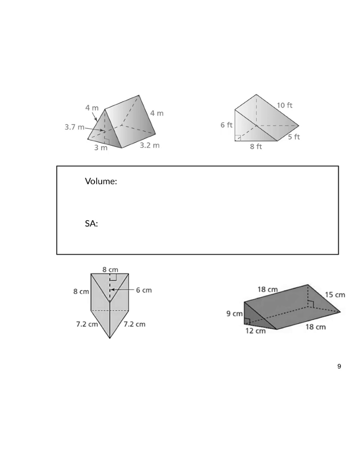Let's talk about volume and surface area of triangular prisms. A triangular prism is a three-dimensional solid that has two congruent triangles that are parallel to each other. There's a triangle on the front and another identical triangle on the back, and then it's surrounded by three rectangles wrapping around those two triangles.